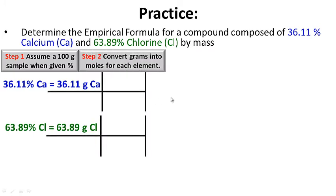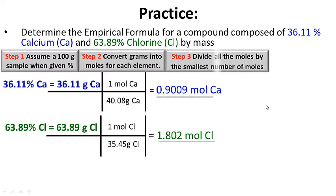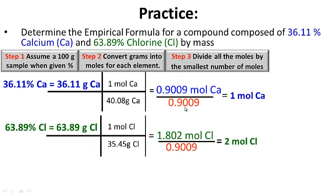Step two: convert grams into moles. One mole of calcium has a molar mass of 40.08 grams, giving us 0.9009 moles of calcium. One mole of chlorine has a molar mass of 35.45 grams, giving us 1.802 moles of chlorine. Step three: divide all moles by the smallest — 0.9009 — giving us 1 mole of calcium and 2 moles of chlorine.